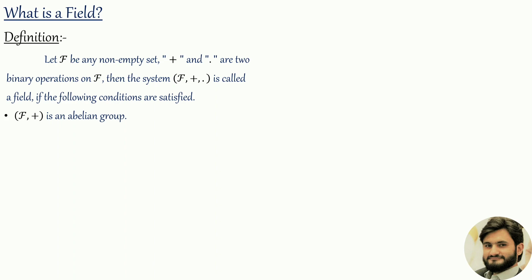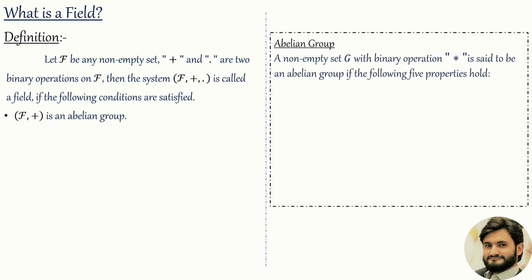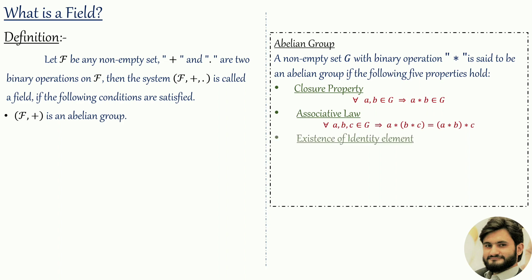The first condition is that f with respect to addition should be an abelian group. An abelian group: a non-empty set g with binary operation (which may be multiplication or addition) is said to be an abelian group if the following five properties hold. The first is the closure property: for all a, b belonging to g, a * b belongs to g. The second is the associative law: for all a, b, c belonging to g, a * (b * c) = (a * b) * c. The third is the existence of an identity element: for all a belonging to g and e belonging to g, where e is the identity element.